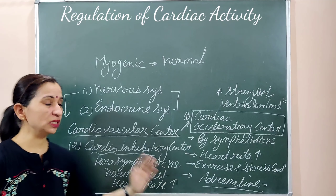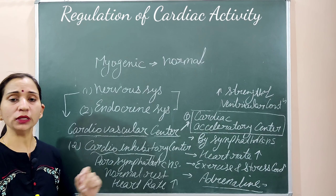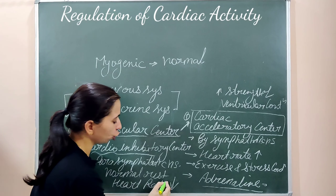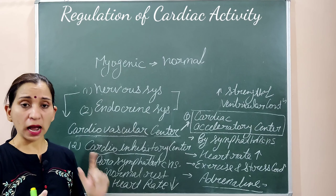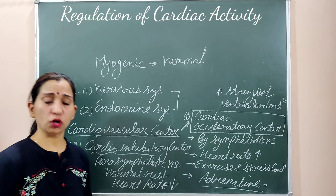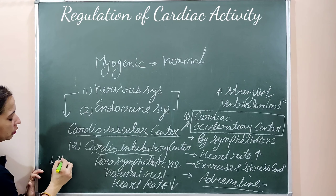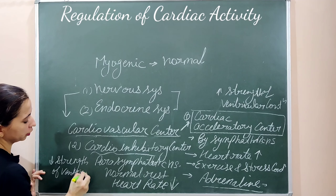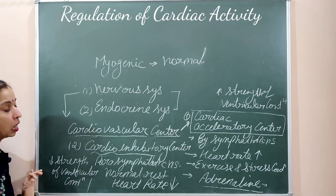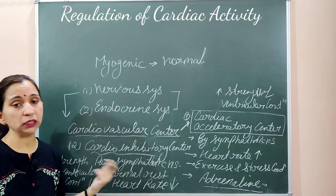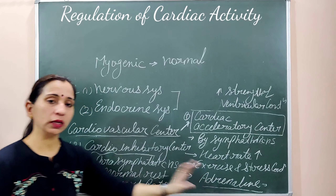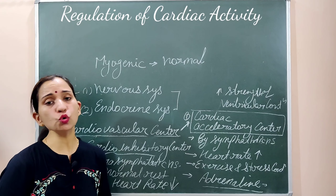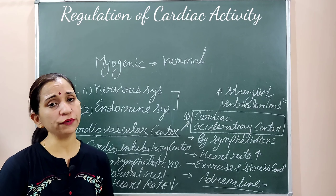The cardiac inhibitory center works under the parasympathetic nervous system during normal rest conditions. It decreases the heart rate, decreases cardiac output, and also decreases the strength of ventricular contraction. The neurotransmitter secreted in the cardiac inhibitory center is acetylcholine. By these two cardiovascular centers, the nervous system controls the functioning of the human heart.